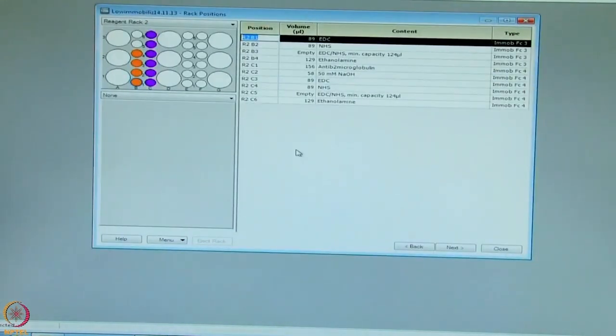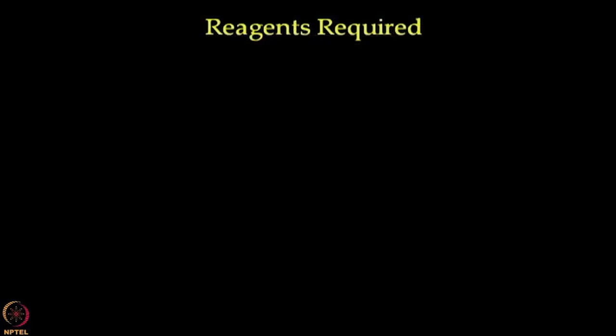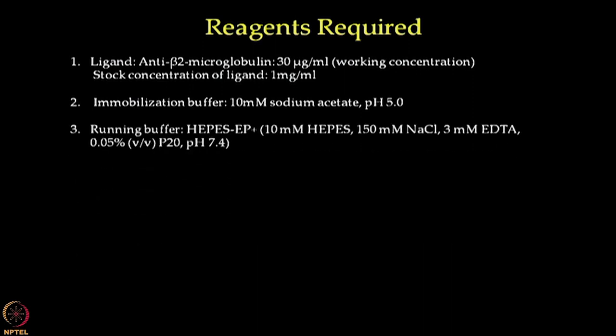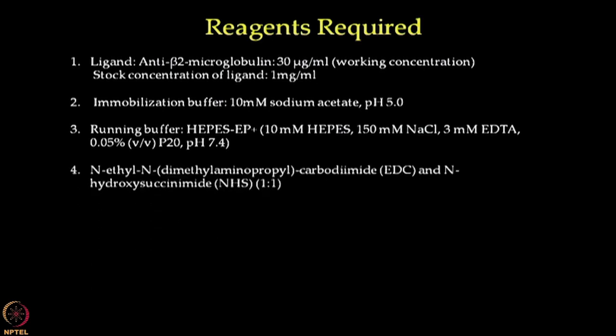Now we will add vials with rack positions and volumes. As per the volumes listed in the table, we will prepare the reagents for immobilization in a similar manner as demonstrated earlier in lecture 33. We prepared a working concentration of 30 micrograms per ml of beta-2 microglobulin antibody from a stock concentration of 1 mg per ml using an immobilization buffer of 10 millimolar sodium acetate pH 5.